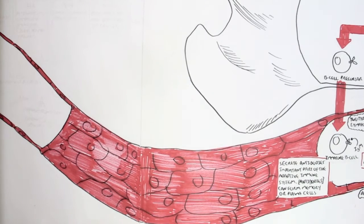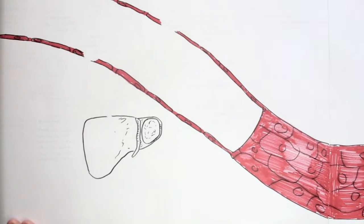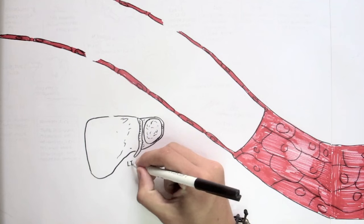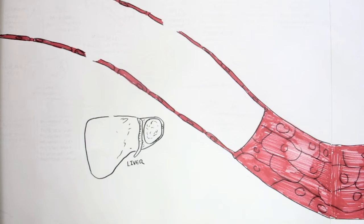So the bloodstream continues on, bringing these cells to different areas. We see the liver. The liver is an important organ in the immune system. It secretes many substances.